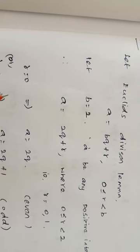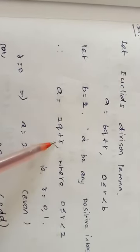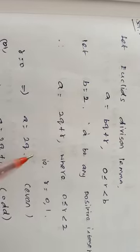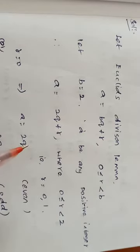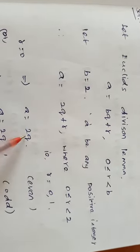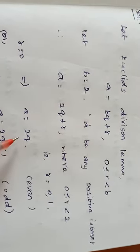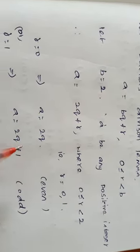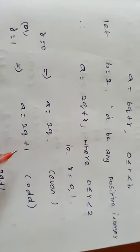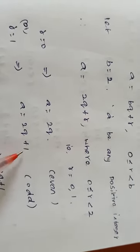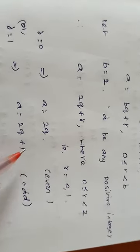First, if R equal to 0, what happens? A equal to 2q. That is, we can write 2 into any number — it is called an even form. Or, for R equal to 1, then A equal to 2q plus 1. Even number plus 1 is an odd number, so automatically that whole form is an odd number.